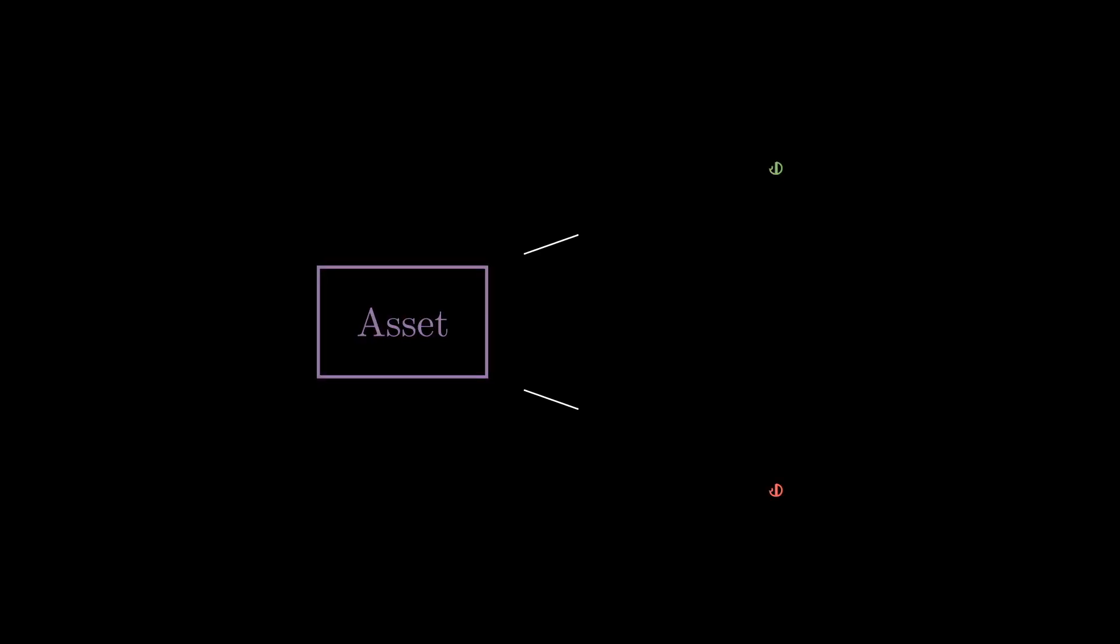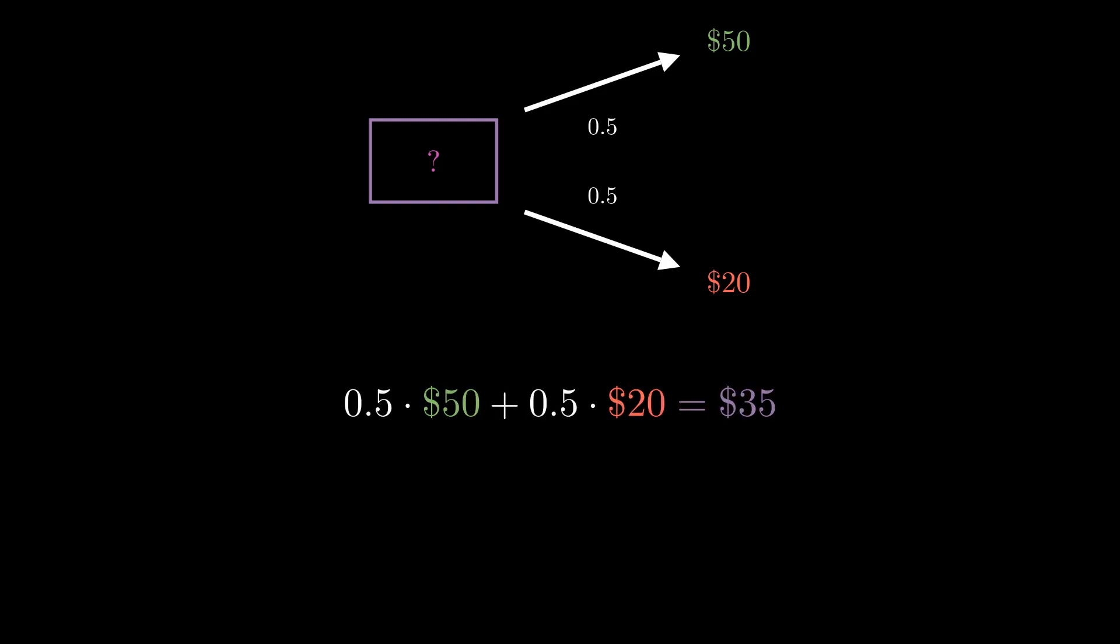Let's say you have the choice to buy an asset. It can pay out $50 or $20, each with 50% probability. How much would you pay for such an asset? Well, like most people, you'll probably take the expected value.